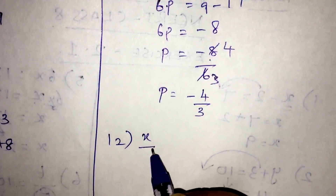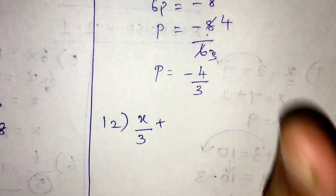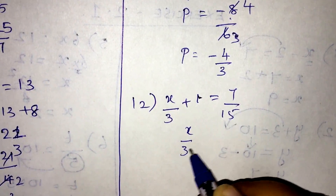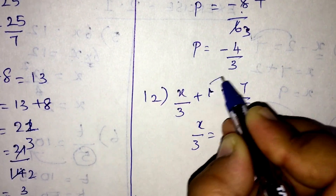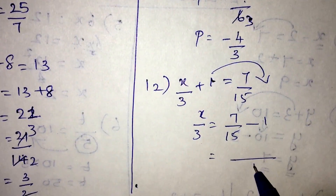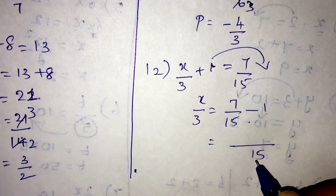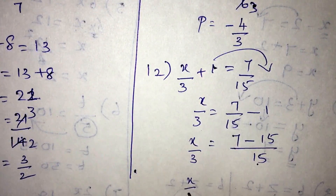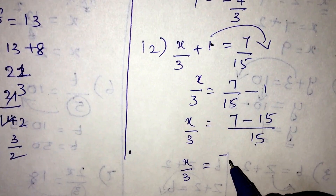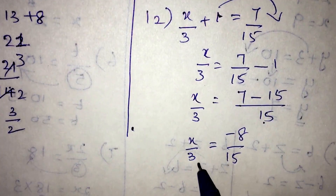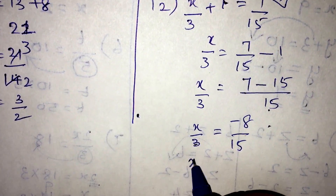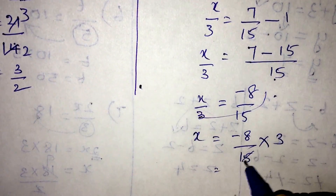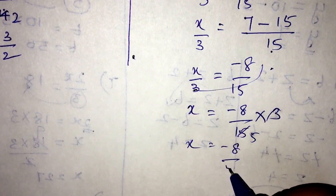Equation number 12: x by 3 plus 1 is equal to 7 by 15. So x by 3 equals 7 by 15 minus 1, which gives x by 3 equals minus 8 by 15. Taking the denominator 3 to the other side, x equals minus 8 by 15 into 3, which simplifies to minus 8 by 5.